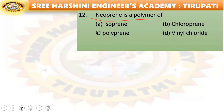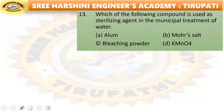Next: neoprene is a polymer of — isoprene, chloroprene, polyprene, or vinyl chloride? Chloroprene is the right answer. Neoprene is a polymer of chloroprene.